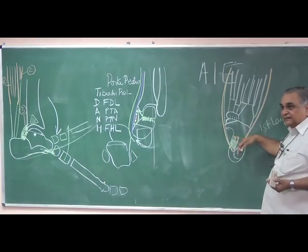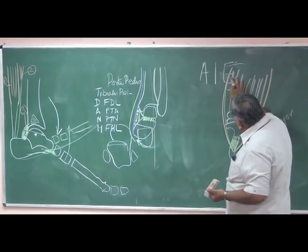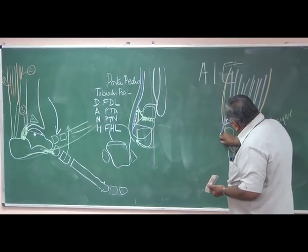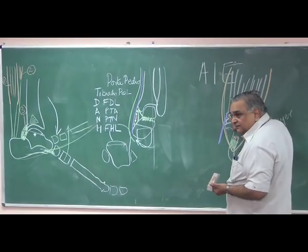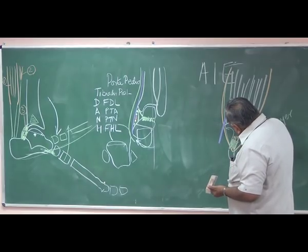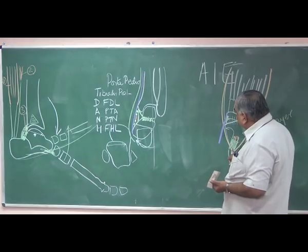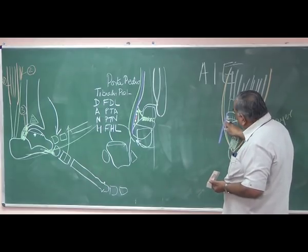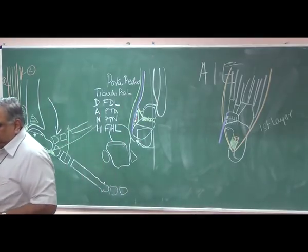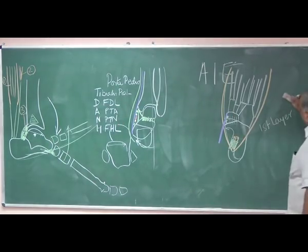All these structures attached to the medial calcaneal process have to be divided to allow correction of the deformity, and also to correct the forefoot adduction. The tibialis posterior is attached to the head of the navicular, so after resecting the tibialis posterior, you may also have to divide the talonavicular capsule to allow the forefoot to correct. So abductor hallucis is divided, tibialis posterior is corrected, and the talonavicular capsule may need to be cut.